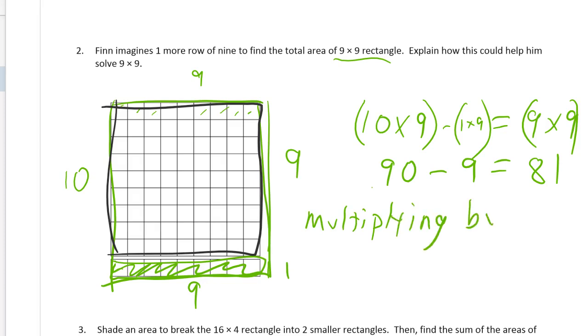So multiplying by 10 is easy, so subtract a 9 to get nine nines.